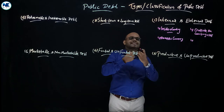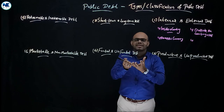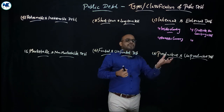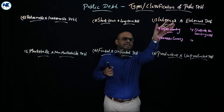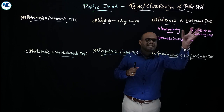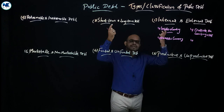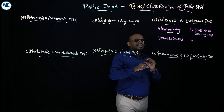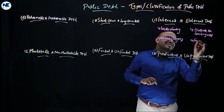India's foreign exchange reserves were depleted, and India took a loan from the IMF. The loan raised in external debt is in the form of foreign currencies.